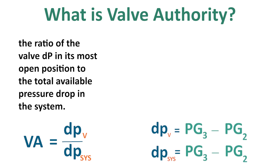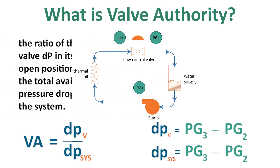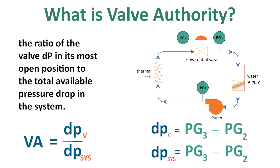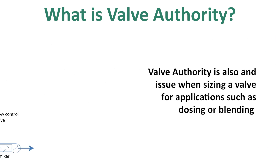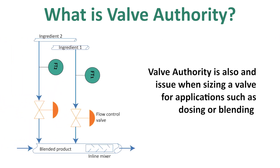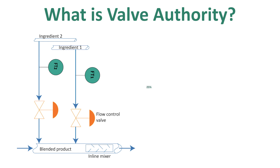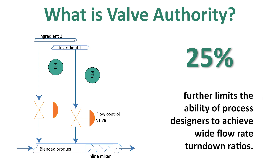This problem is commonly faced in hydronics, or the control of thermal water circulating loops. In these systems, significant energy is lost by sizing valves to always consume 25 percent of the pump's energy. Valve authority is also an issue when sizing valves for applications such as dosing or blending. This 25 percent lower bound limits the flexibility in valve selection and further limits the ability of process designers to achieve wide flow rate turndown ratios.